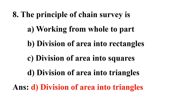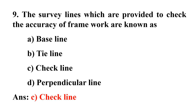The ninth question: The survey lines which are provided to check the accuracy of the framework are known as? Option A: baseline, Option B: tie line, Option C: check line, Option D: perpendicular line. The answer is check line.